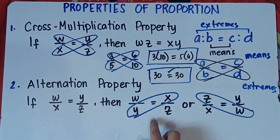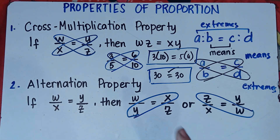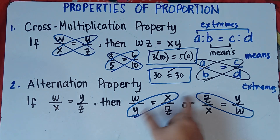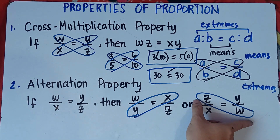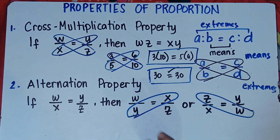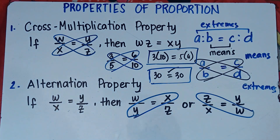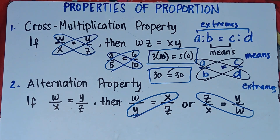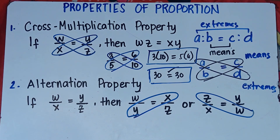Always remember: in the alternation property, you can interchange the means or you can interchange the extremes, but only one at a time. You cannot interchange both means and extremes at the same time. It should be one at a time.